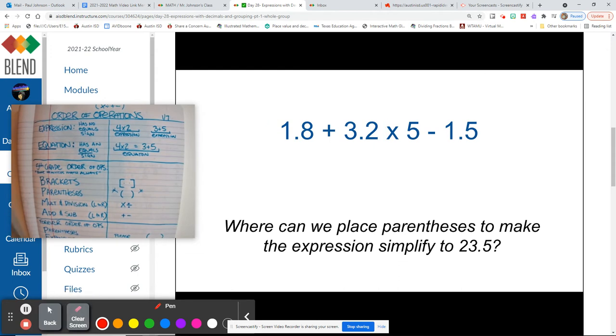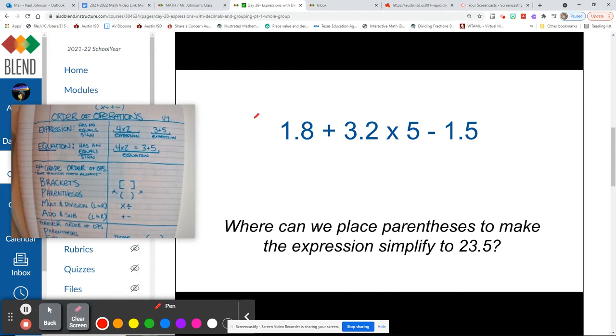So let's see, go ahead and place your parentheses where you think to make the answer 23 and 5 tenths. Keep in mind over here we're multiplying by 5, that might be another good indicator that we need to put our parentheses somewhere else. Right now, 3.2 times 5 is about 15, so we're going to need way more to get 23.5.